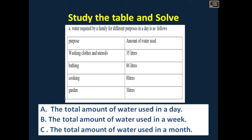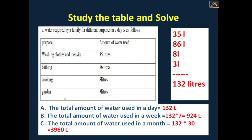Next, study the table and solve. Your time starts now. The water required by a family for different purposes is: 500 ml plus 100 ml, then 50 ml plus 60 ml plus 150 ml plus 11 ml plus 80 ml.